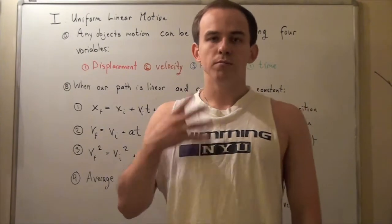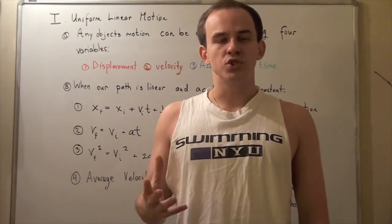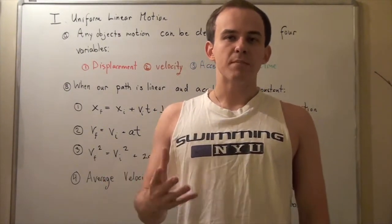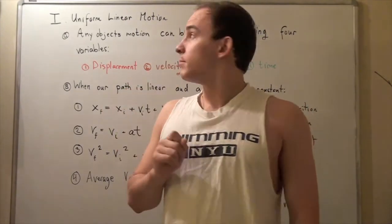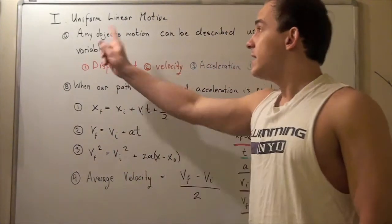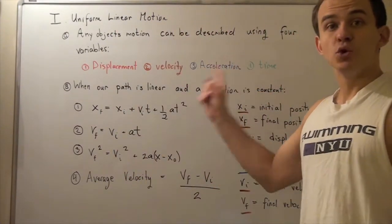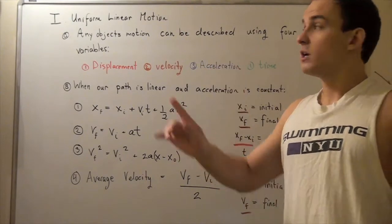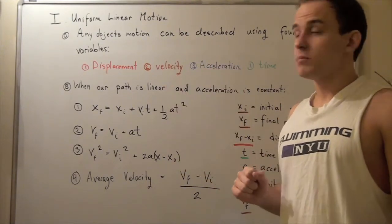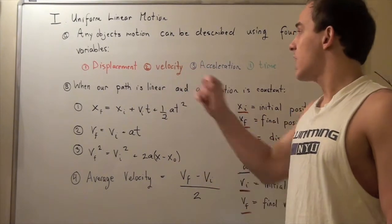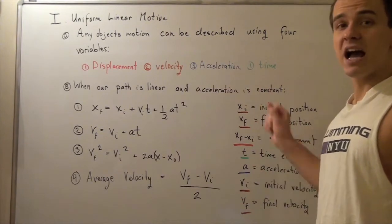Vectors are important because they can be used to describe the motion of an object. Any object's motion can be described using four variables: displacement, velocity, acceleration, and time.